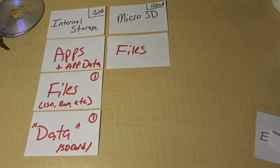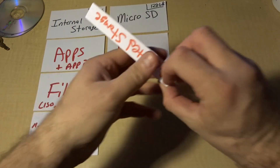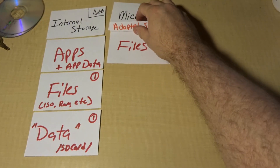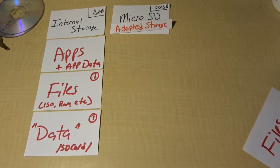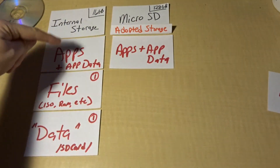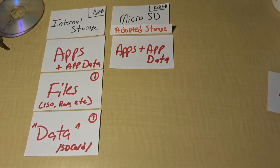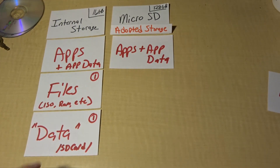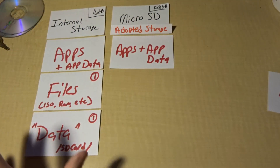So you're saying to yourself, I've got Marshmallow on this thing, I'm going to use the power of adopted storage, and I'm going to make that micro SD card adopted storage. What happens? Now your adopted storage may contain apps as well as app data. And your internal storage will continue to provide other storage space for apps and data, as well as files, as well as your quote SD card, or the data folders.